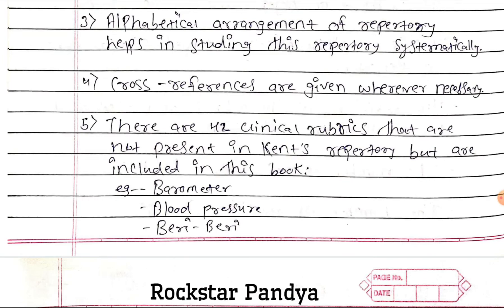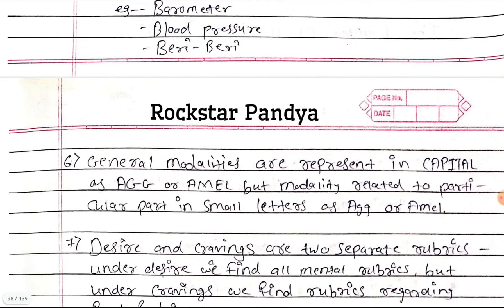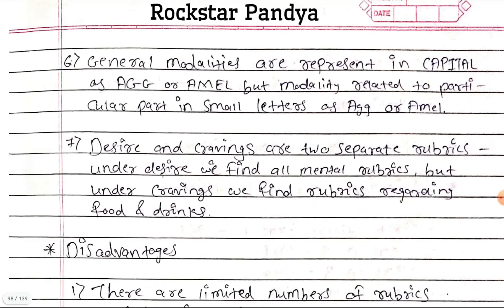Examples of those additional rubrics include Barometer, Blood Pressure, and Beriberi. General modalities are represented in capitals as Aggravation or Amelioration, but modalities related to a particular part are in small letters as aggravation or amelioration.